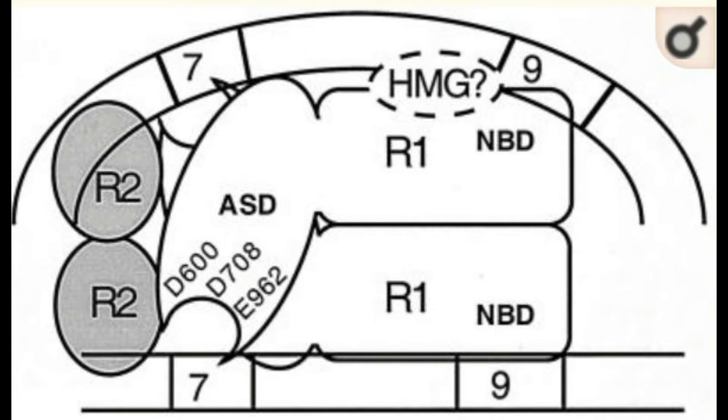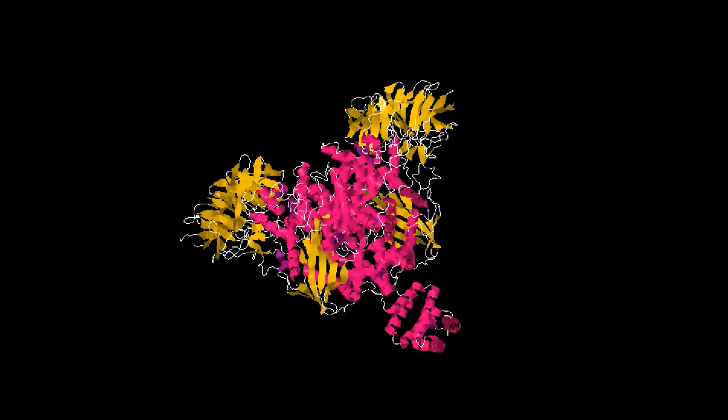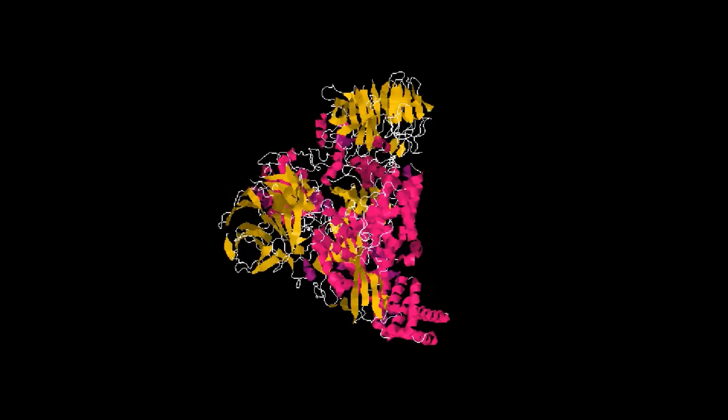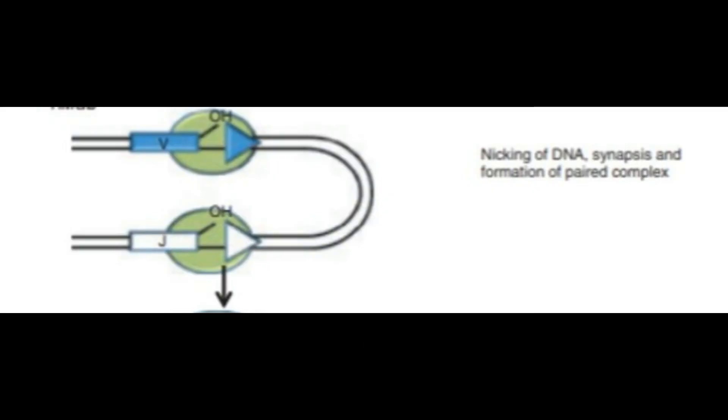The presence of these residues is critical for both the nicking and the hairpin formation in VDJ recombination. They also likely function to coordinate a couple magnesium ions in the active site. The magnesium ions activate a water molecule for nucleophilic attack of the phosphate group to the RSS heptamer in that first nicking step.